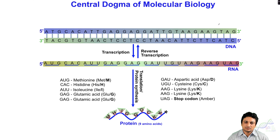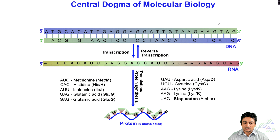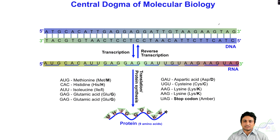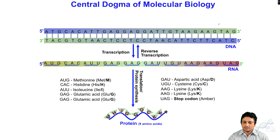Central dogma of molecular biology is the core of molecular biology. Until we understand the central dogma of molecular biology, it will be very difficult for us to understand the other topics in molecular biology. Central dogma is the flow of information from DNA to RNA and RNA to protein in different steps.